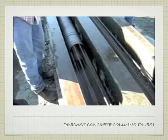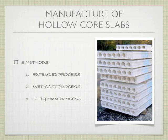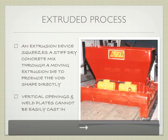Here's one casting bed — much smaller in scale than the previous one — and another casting bed next to it. These are both for piles or columns, and they'll cast both at the same time. The manufacture of hollow core slabs is slightly different from these other precast elements. There are three different methods depending entirely on what equipment the prefabricator has: the extruded process, the wet cast process, and the slip form process.